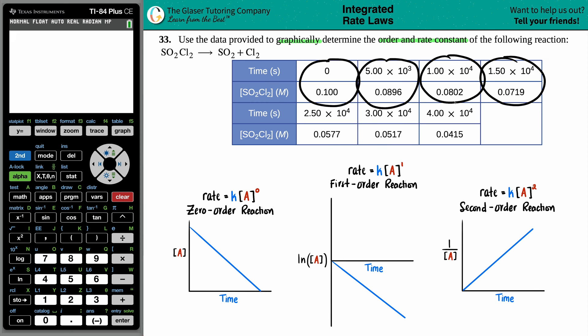So we have to plot these graphically. Now on the bottom of the screen, I do have three different graphs that we should memorize, especially for their units to know which order this reaction is going to be. So I always start from left to right or the lowest number first.